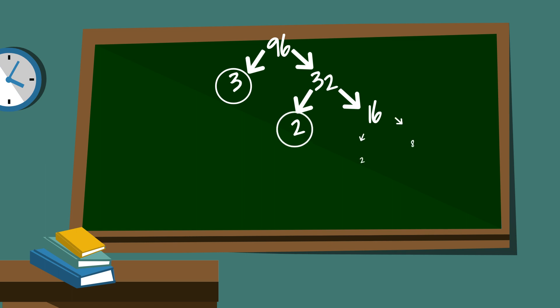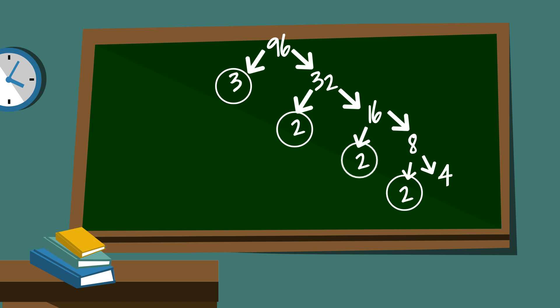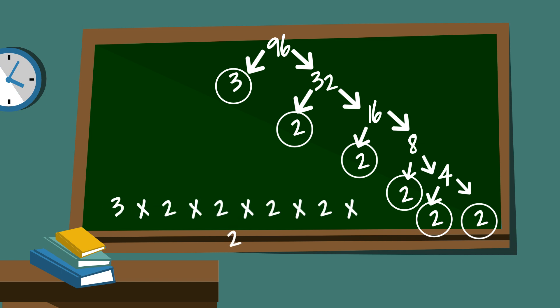2 times 8 is 16 — circle the 2. 2 times 4 is 8 — circle the 2. And finally 2 times 2 equals 4. So the prime factorization of 96 is 3 times 2 times 2 times 2 times 2 times 2.